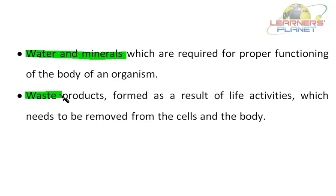And lastly, waste products — waste products formed as a result of life activities need to be removed from the cells and the body. All these substances are very important because they play an inevitable role in our body and they all need to be transported. Oxygen is mainly transported by the circulatory system, in which red blood cells play a very important role.